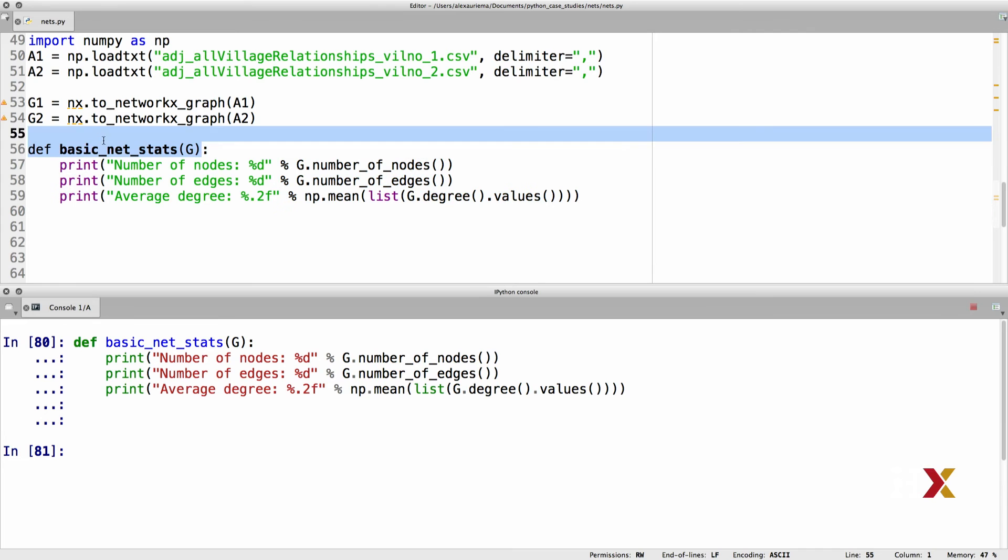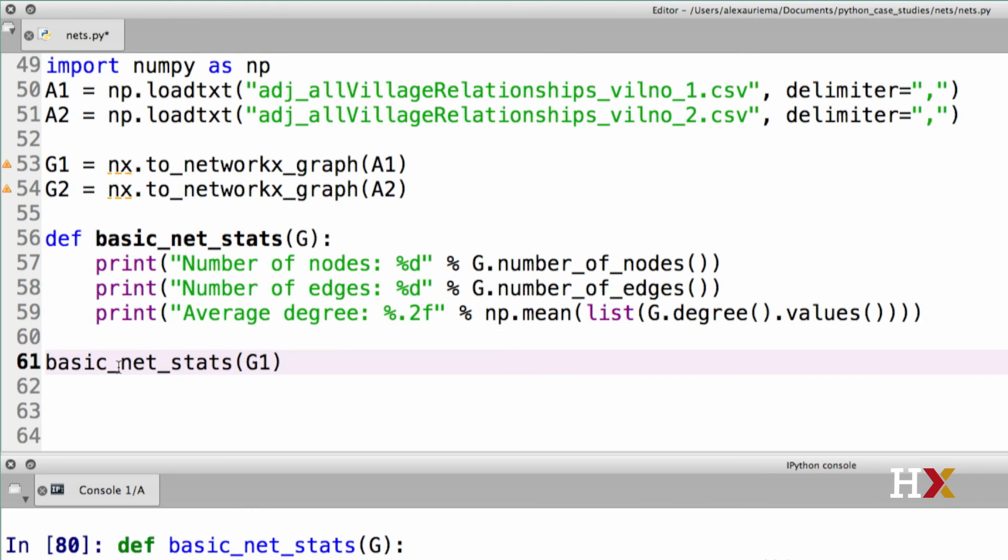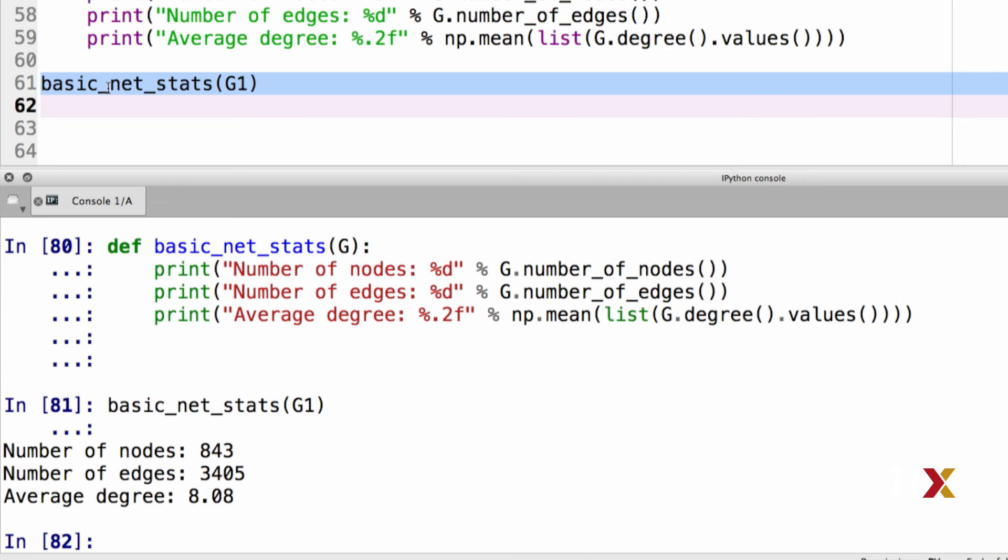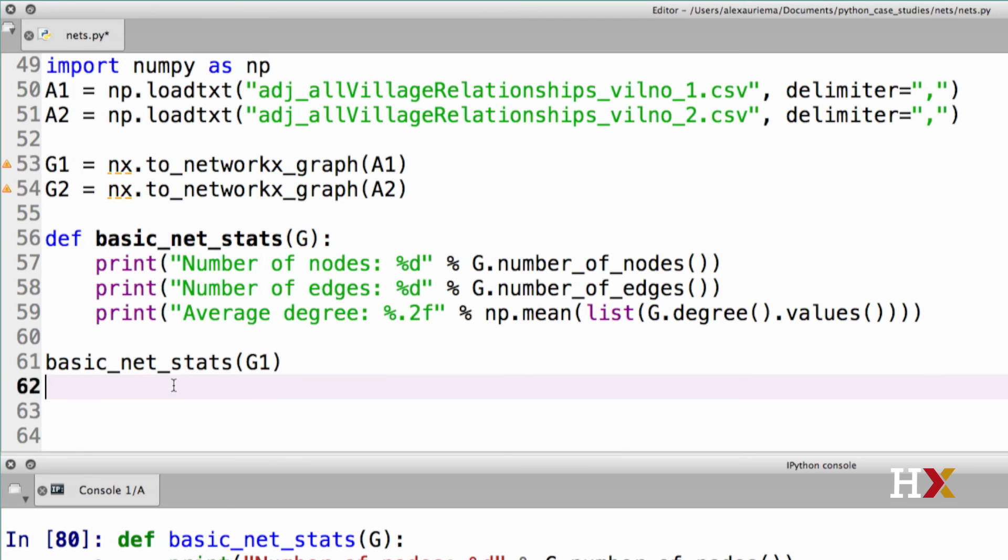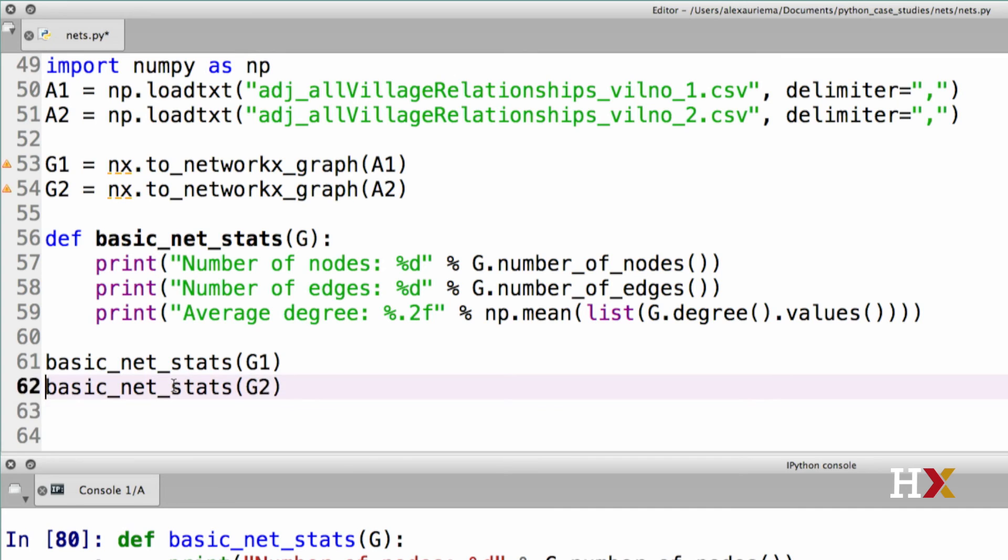And then we can call it on G1 and on G2. In G1, we have 843 nodes, 3,400 edges, and the average degree is about 8.